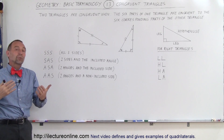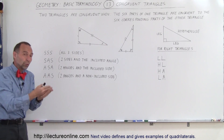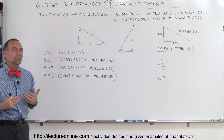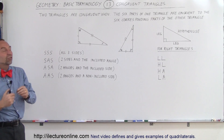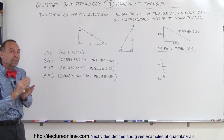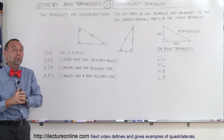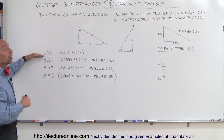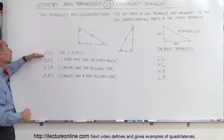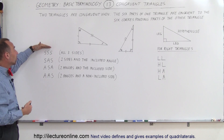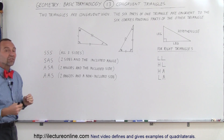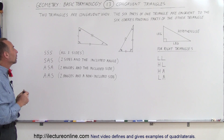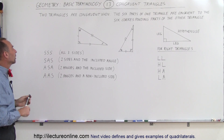You can see that the six parts of this triangle are congruent to the six parts of the other triangle, and therefore they are congruent triangles. Now, in order to prove that one triangle is congruent to another, does that mean we have to show all six parts are equal? The answer is no. It is sufficient to show that three of the six parts are equal or congruent. We have an acronym for each of the four cases that prove two triangles are congruent.